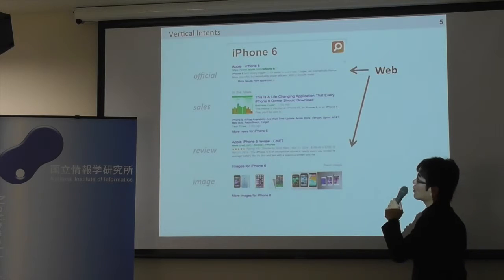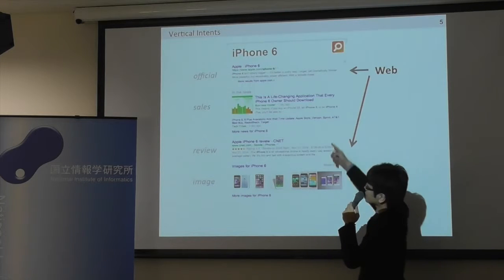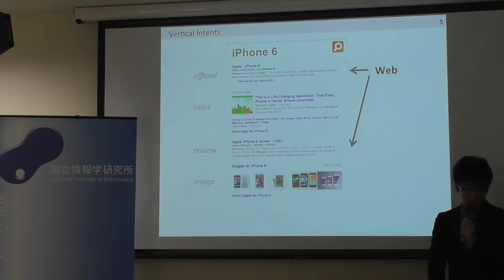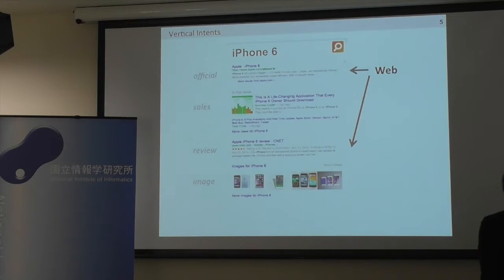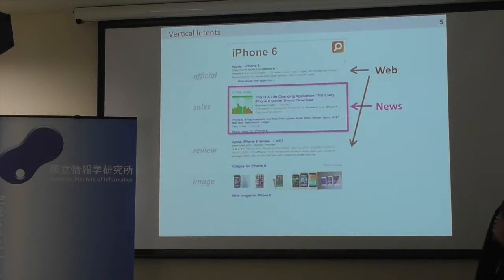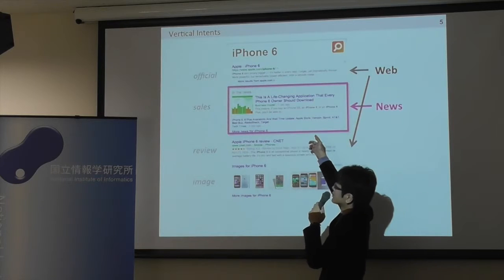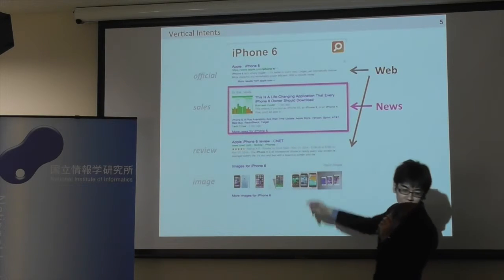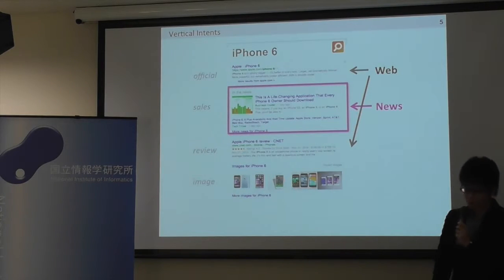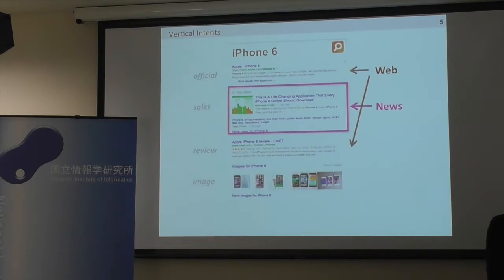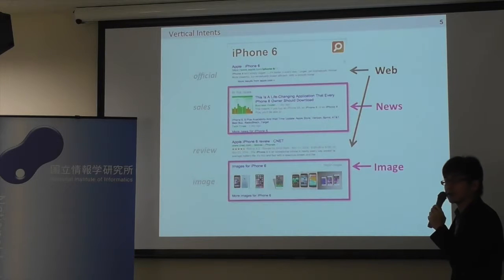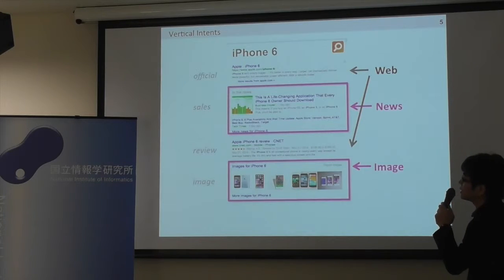But when we look at the second and fourth search results, we can see these are not usual web search results. The second search result is from the news search, and the fourth search result is from the image search.